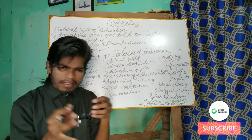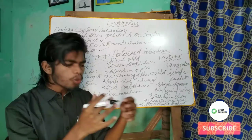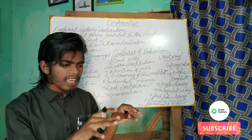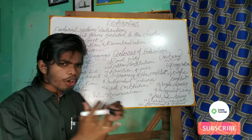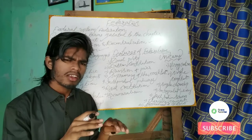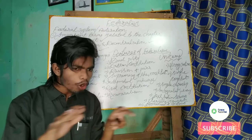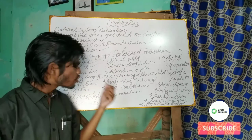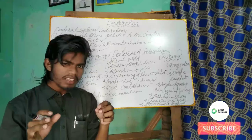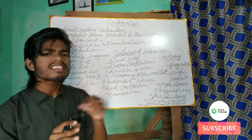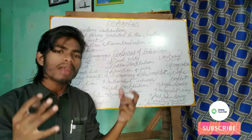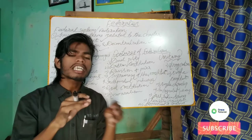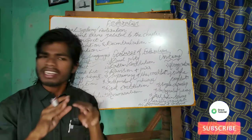The concurrent list is something different — this list is common to both the center as well as the state, meaning both the central government and the state government can make laws on subjects mentioned in the concurrent list. But in case of any conflict between the two, there is no doubt the central law will prevail. Residuary subjects are those not mentioned in any union list, state list, or concurrent list — the authority to make law on residuary subjects is left with the center.